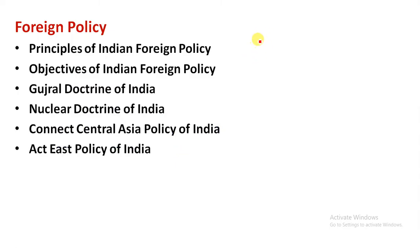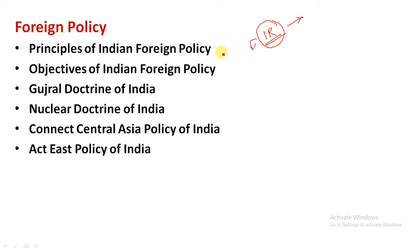This chapter is very important — it is a subject of international relations. In our foreign policy, what is the rule of foreign policy? What is the objective? What is the ideology of India? What is the Gujarat doctrine? What is the nuclear doctrine? What is the policy of Asia? What is the activist policy? This is important not only from a political point of view, but also from an international relations point of view.